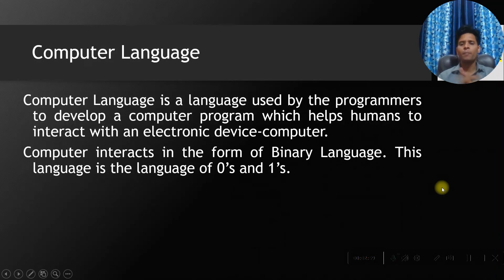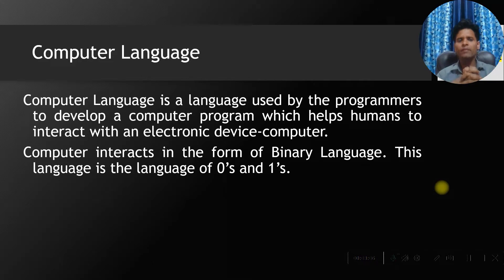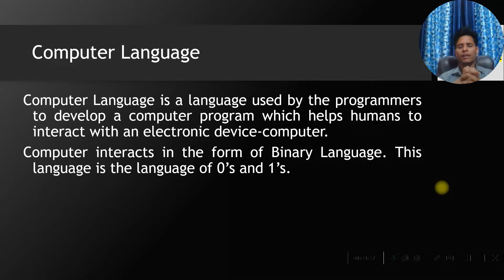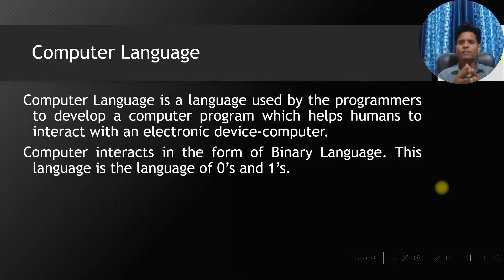Computer language is a language used by programmers to develop a computer program, which helps humans interact with electronic devices. Computers interact in the form of binary language — zeros and ones — and almost every machine, whether a smartphone or a laptop, works on machine language. Since the machine knows only binary and we know English, direct communication cannot take place. So we require something to translate the code — a language processor, like an interpreter or compiler, or in everyday use, an operating system. These help convert our program to machine language so the machine can understand.